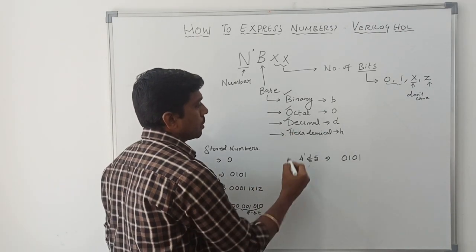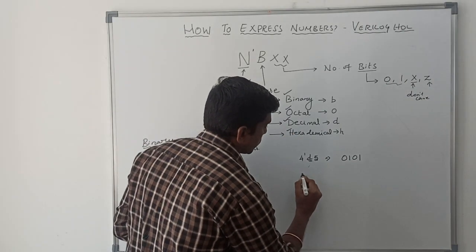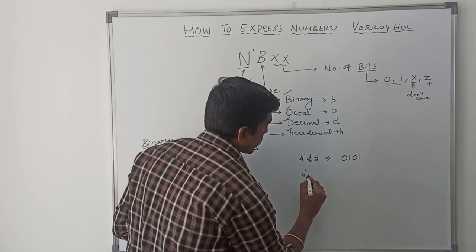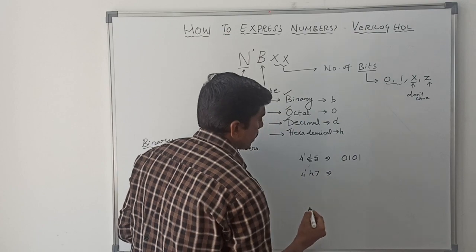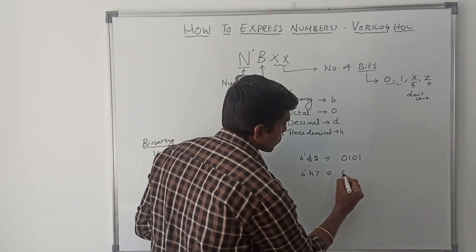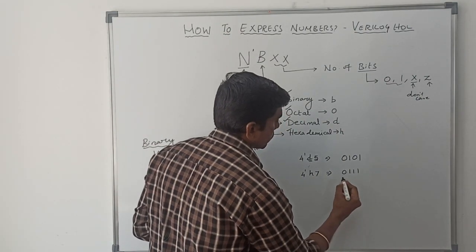Then, we go for hexadecimal. Hexadecimal value, let me take 4 tick small h 7. The stored number is 0111. It's a 4 bit hexadecimal value.